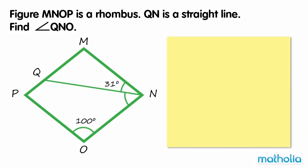Figure MNOP is a rhombus. QN is a straight line. Find angle QNO. The sum of angle pairs between parallel lines is 180 degrees, so angle MPO is equal to 180 degrees minus 100 degrees, which equals 80 degrees.